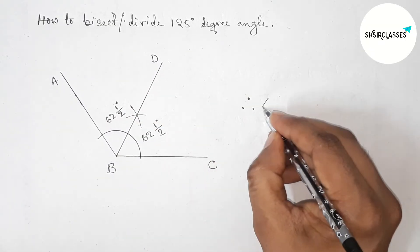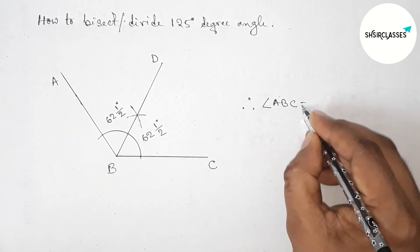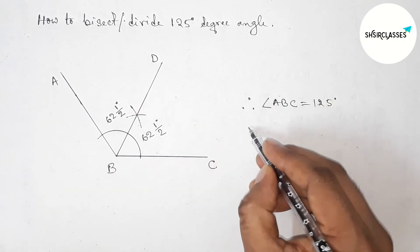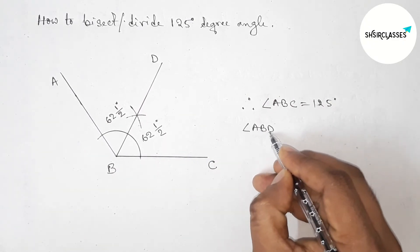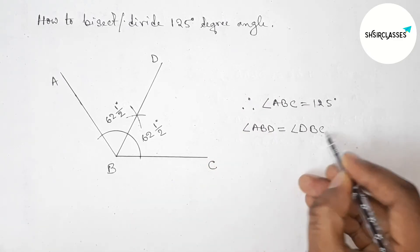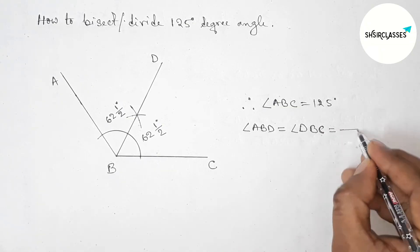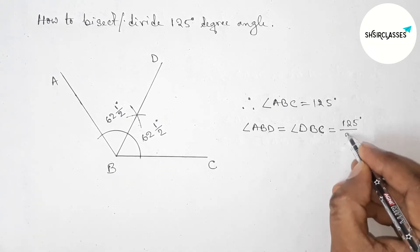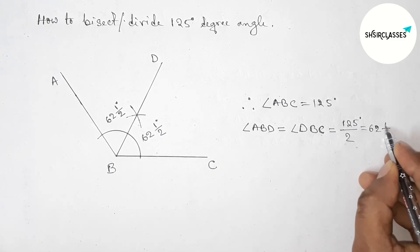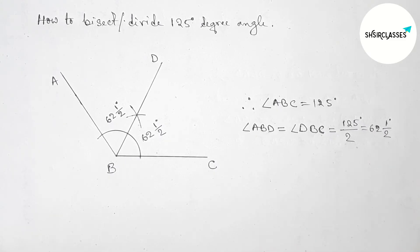Therefore, angle ABC is 125 degrees, and angle ABD is equal to angle DBC, and both are 125 by 2. So now simplifying this, this is 62 1/2 degree angle.